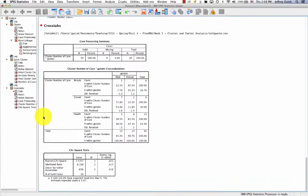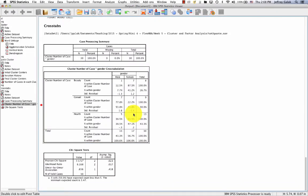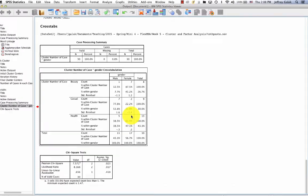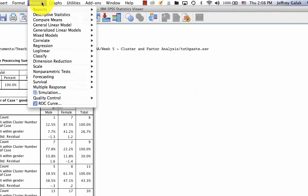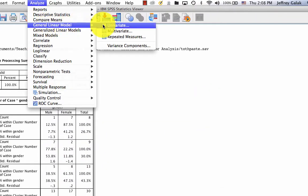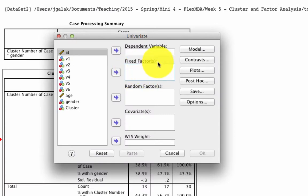Now let's take a look at age. So for age, we have a categorical variable, cluster membership, and a continuous variable, age. In order to look at this, the tool that we can use is actually ANOVA. So we go to Analyze, General Linear Model, Univariate. In our fixed factor, that's our grouping factor, we just put the cluster membership. And in our dependent variable, we put the age.